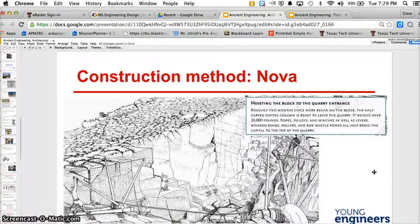Some machines were used for hoisting the block at the quarry entrance to move it on out of there.